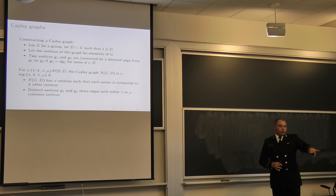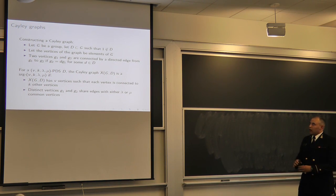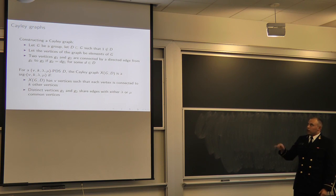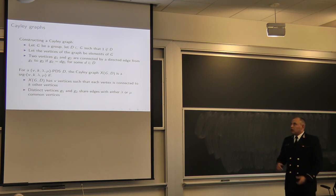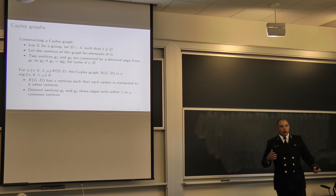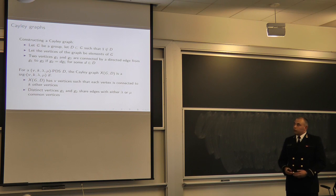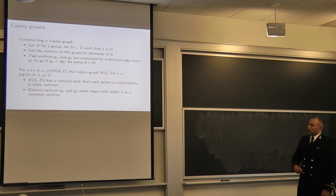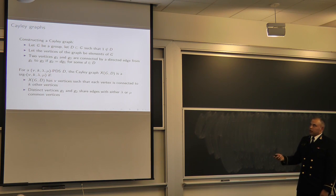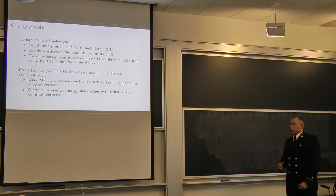Next we look at Cayley graphs. The Cayley graph is just a set of vertices based on a group G, and then you take a subset of G without the identity — you can't have the identity, otherwise it breaks the construction. Two vertices on the graph are connected by a directed edge from g1 to g2 if g2 is equivalent to g1 times d for some d in the subset. For most of our work we'll use addition and subtraction as our operation rather than multiplication.